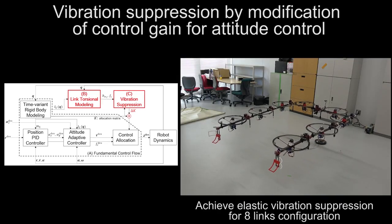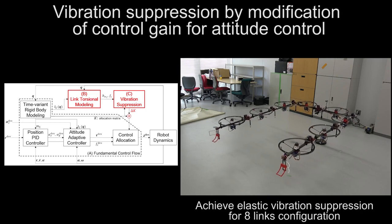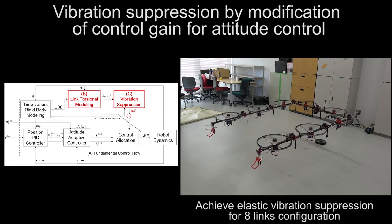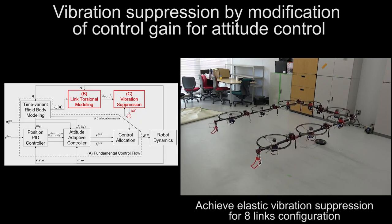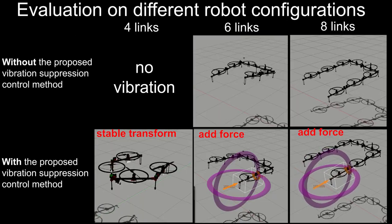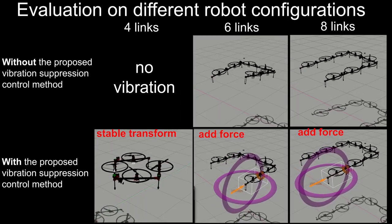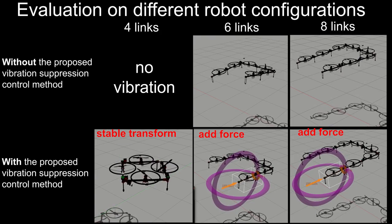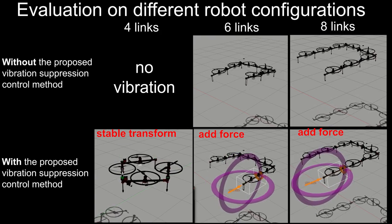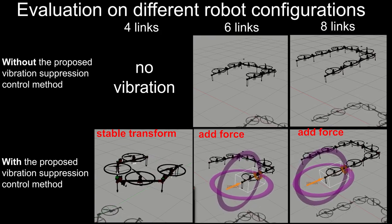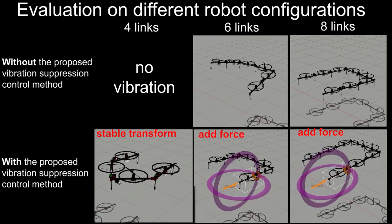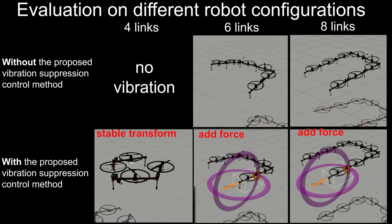This video shows the achievement of vibration suppression for the eight-link model with the proposed control method. We also evaluate the flight stability with other configurations in simulation. The vibration of the six-link model can also be suppressed by our proposed method, which shows the generality of our approach.